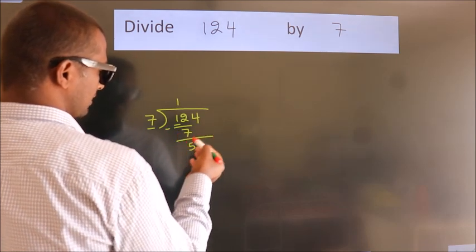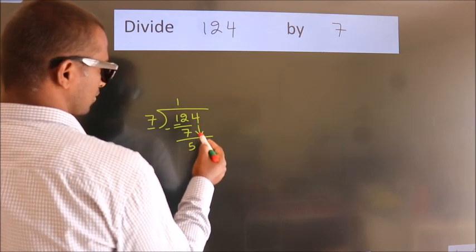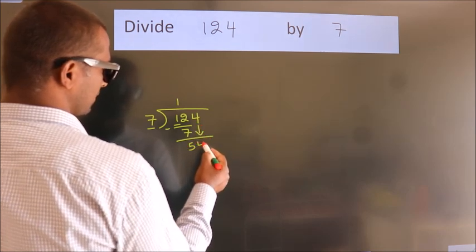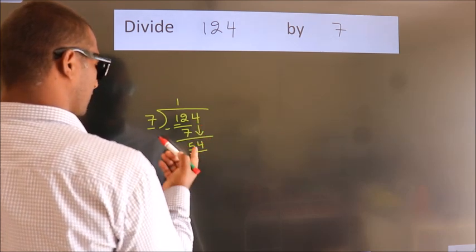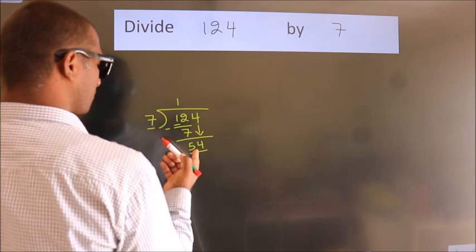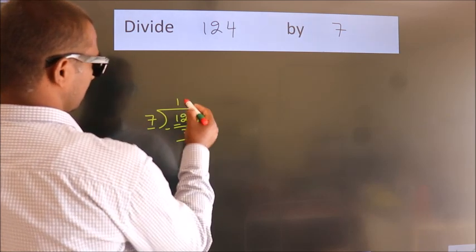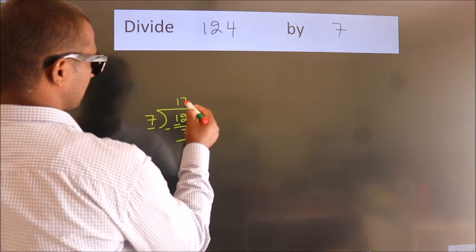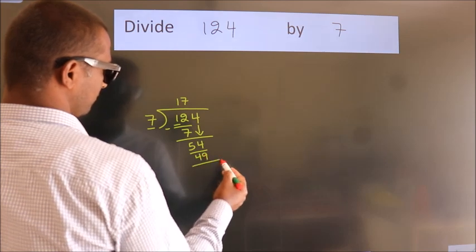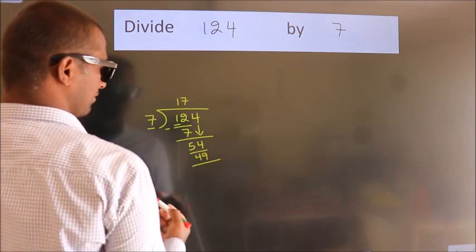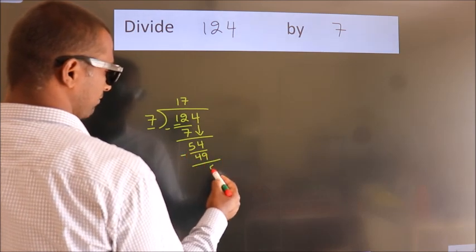After this, bring down the beside number. So 4 comes down, giving us 54. A number close to 54 in the 7 times table is 7 sevens, which is 49. Now we subtract and we get 5.